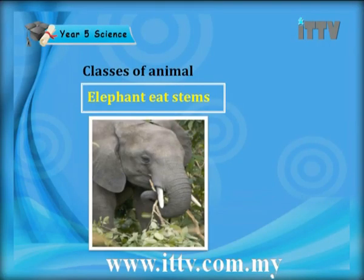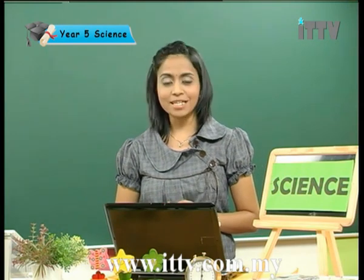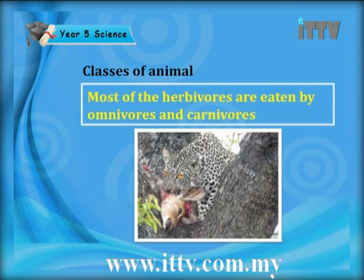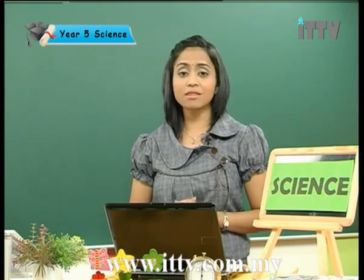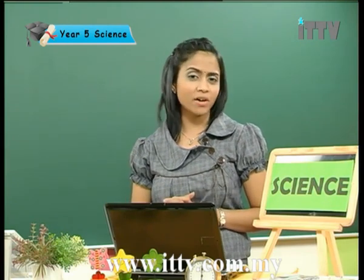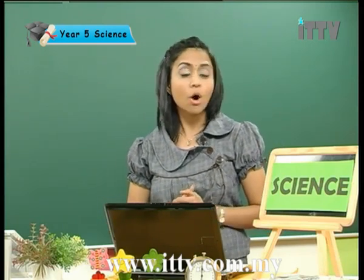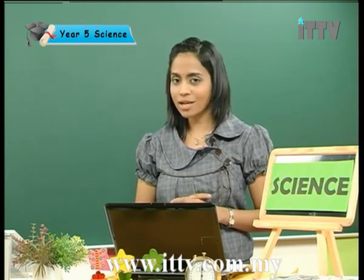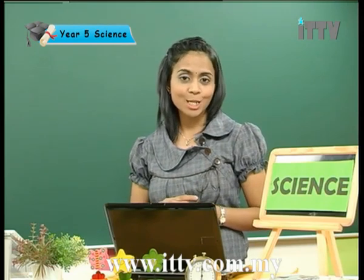Elephants, the largest mammal living on land, actually eat stems. Although they are the largest mammal, they only eat vegetables and are obviously herbivores. Most herbivores are eaten by omnivores and carnivores. These herbivores, although quite small animals, actually have a very strong sense of hearing. They need this so they can notice the approach of omnivores or carnivores coming to attack them. Remember, all herbivores have a good sense of hearing to find whether a predator is close by.